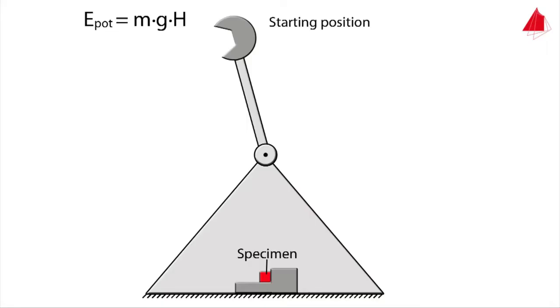Here is the main principle of the measurement. In its starting position the pendulum only has potential energy. It is given by mass of the hammer m times gravitational acceleration g times starting height capital H.